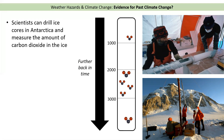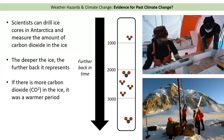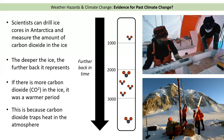Scientists can look for bubbles of gas that are trapped in the ice. For example, between 2,000 and 3,000 years ago there were lots of carbon dioxide molecules trapped in the ice, so we can assume this was probably a warmer period on Earth, because carbon dioxide traps heat in the atmosphere. From 1,000 to 2,000 years ago there's not much carbon dioxide, so that period was probably much colder. The deeper the ice, the further back it represents, and more carbon dioxide trapped in the ice indicates a warmer period.